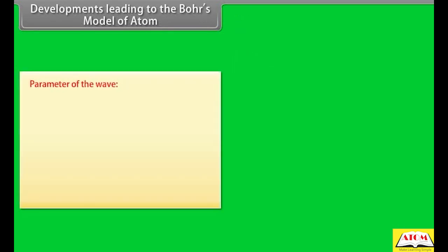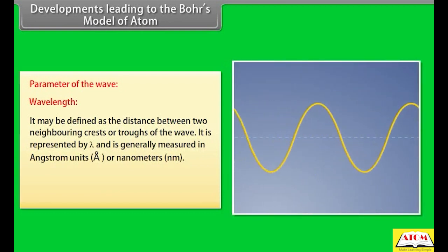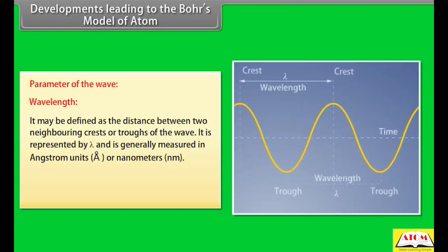Parameters of the wave — Wavelength: It may be defined as the distance between two neighboring crests or troughs of the wave. It is represented by lambda and is generally measured in angstrom units or nanometers. 1 angstrom = 10⁻¹⁰ meter; 1 nanometer = 10⁻⁹ meter.